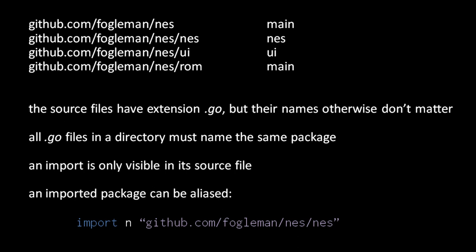By default, an imported package is known by its name, but you can choose a different name. This is useful when a package name is too verbose to type, or when it conflicts with some other name. Here, the NES package is imported with the conveniently short name n.